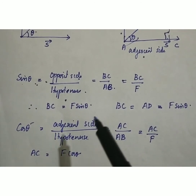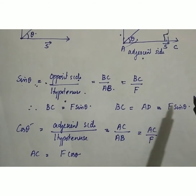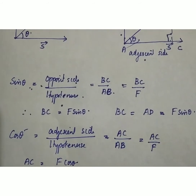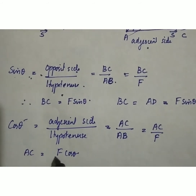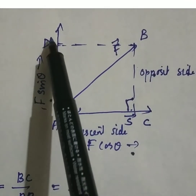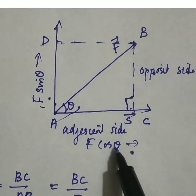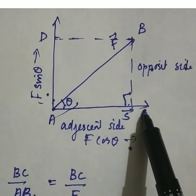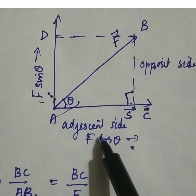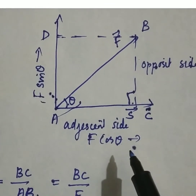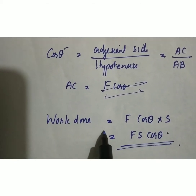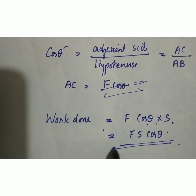F cos theta produces the displacement in the horizontal direction. F sin theta has no influence on the object to make any displacement in the horizontal or vertical direction. Therefore, we can write: work done is equal to F cos theta into S, that means W equals Fs cos theta.